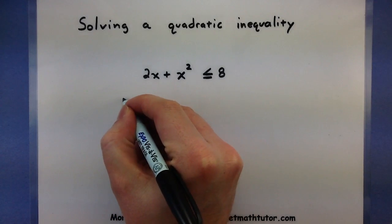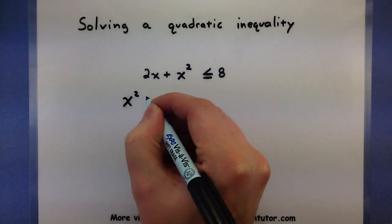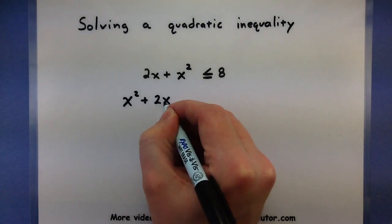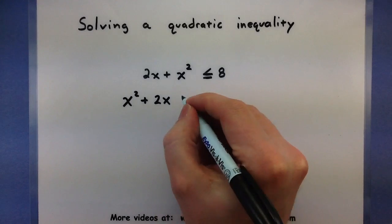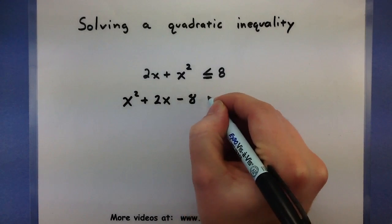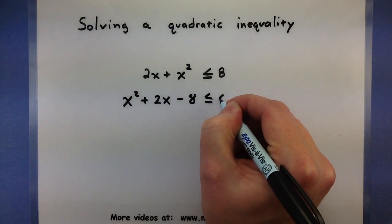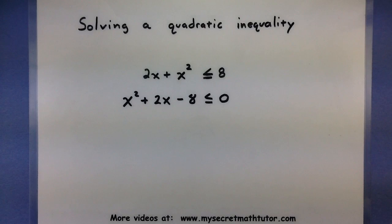That means as I write my terms, I'll start with the x squared term, then the x term, I'll move my 8 over, and now I'll have it in relation to 0. This is really important for inequalities because it's a lot easier determining positive or negative when things are in relation to 0, rather than trying to track things whether they are greater than or equal to a number. So we're going to work with this.